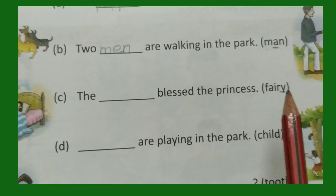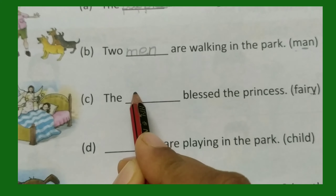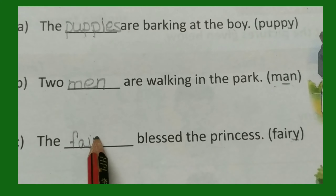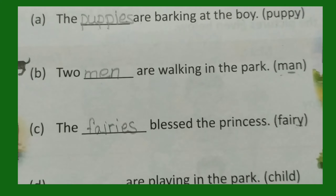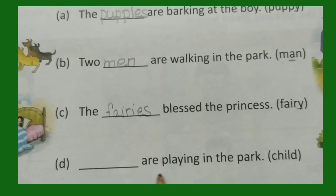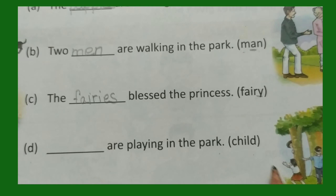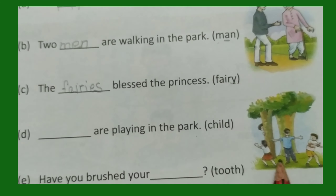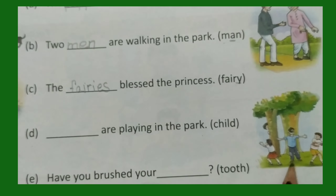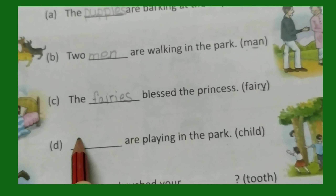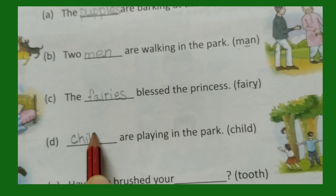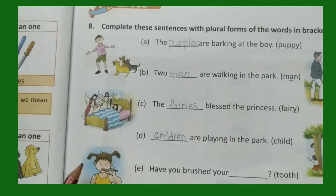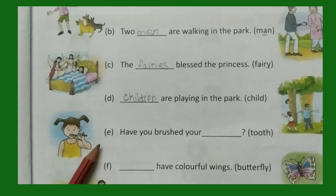For c, the dash blessed the princess — the word is fairy. The word ends with y, so we remove y and add ies: fairies. For d, dash are playing in the park — the word is child. More than one, so the plural form is children: c-h-i-l-d-r-e-n.